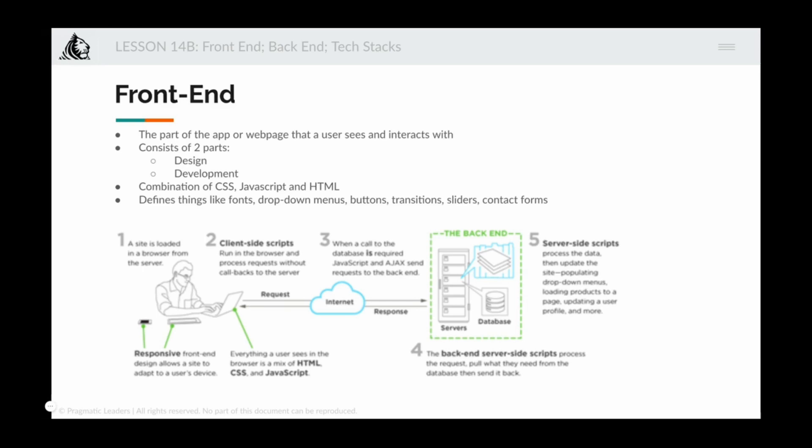There are two parts of it: one is design and two is development — that is, one is how it looks and feels and two is how it works. Front-end squarely consists of just three things: CSS, JavaScript, and HTML. These are the three building blocks of your front-end, whatever you're building.